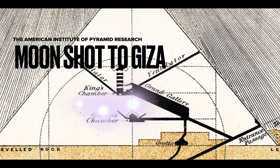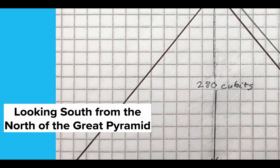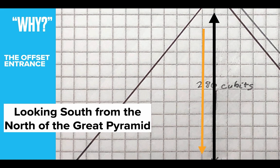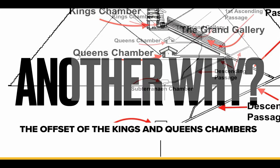We're going to take a moonshot to Giza to look at the Great Pyramid offsets. Looking south from the north side of the Great Pyramid, we can ask: why is that original door offset? If you take 280 cubits up the center of the pyramid, the door is offset 14 royal cubits to the east. And there's another major offset in the Great Pyramid.